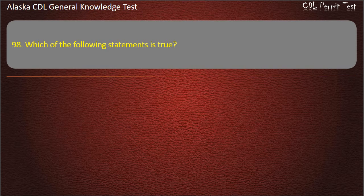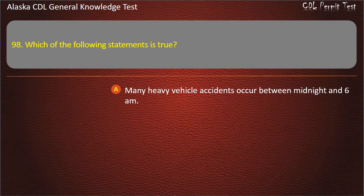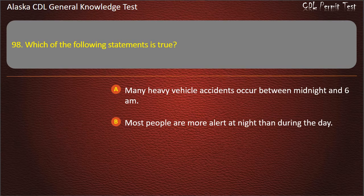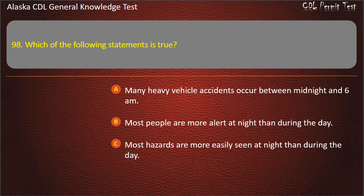Question 98. Which of the following statements is true? Many heavy vehicle accidents occur between midnight and 6 a.m.; most people are more alert at night than during the day; or most hazards are more easily seen at night. Answer: Many heavy vehicle accidents occur between midnight and 6 a.m.